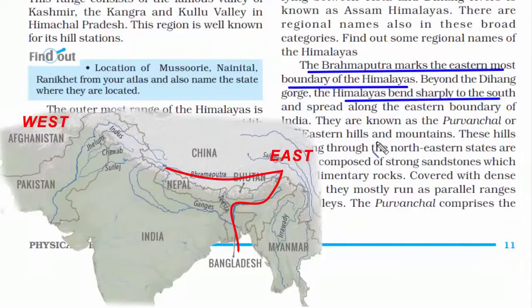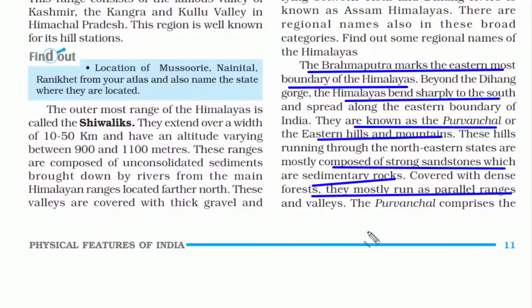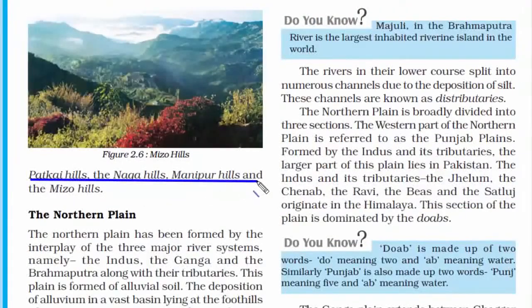On the eastern side, the Himalayas bend sharply to the south — these eastern hills and mountains are also known as the Purvanchal. The land here is low, with a depression filled over time by the Brahmaputra river, leading to accumulation of sedimentary rocks and dense vegetation, creating many parallel ranges and valleys. The hills comprising the Purvanchal include the Patkai Hills, the Naga Hills, the Manipur Hills, and the Mizo Hills.